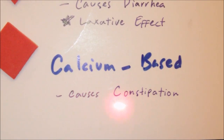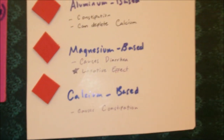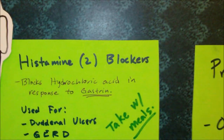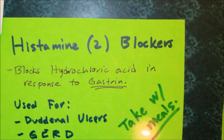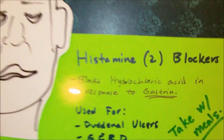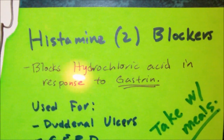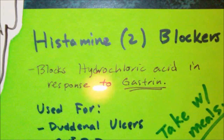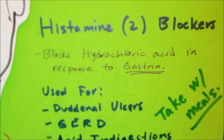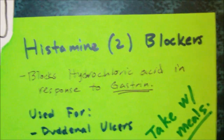Now let's talk briefly about histamine 2 receptor blockers, or H2 blockers. To simplify this, we can basically say that these drugs block the release of hydrochloric acid in the stomach in response to gastrin. So overall, what it does is it basically decreases the production of gastric acid from the parietal cells within the stomach.